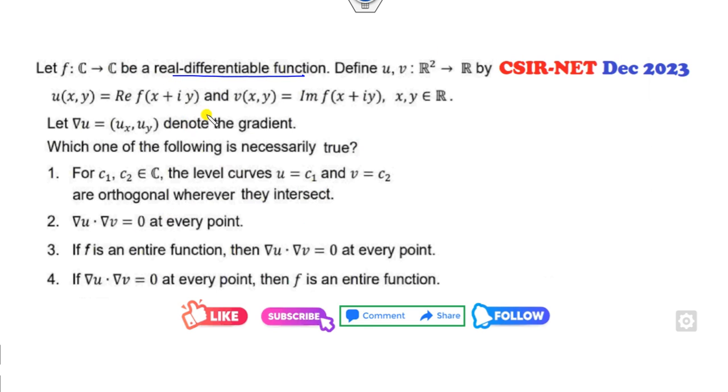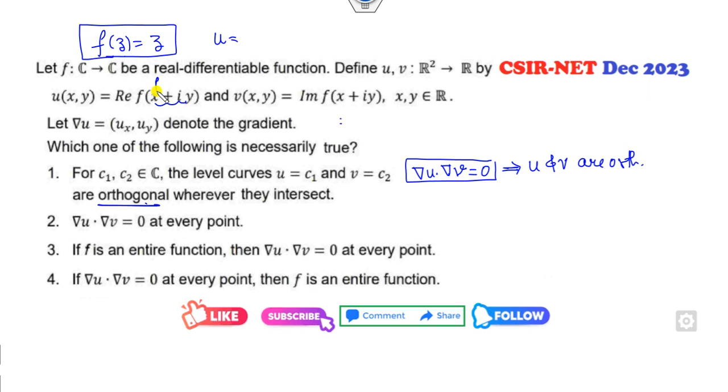F is a real differentiable function. What kind of function? Not given. So I can simply assume Z. It's differentiable, you can assume any others like sin(z) because it's not given whether it's entire or not, it's just a simple differentiable function. U and V are here. Gradient is written as ∇u = (u_x, u_y). Which of the following is necessarily true? Which are orthogonal? What is the meaning of orthogonal? That means the dot product is 0. If I prove this, it means U and V are orthogonal. If I choose here, what is my U? U is the real part of Z, so U is my X, V is my Y.